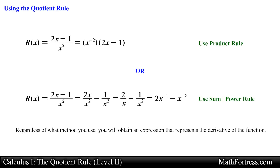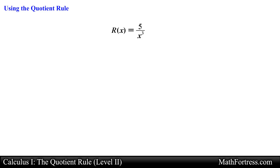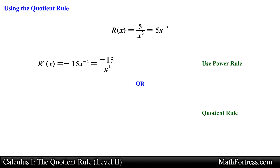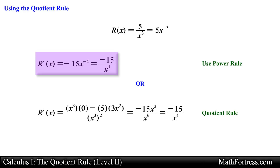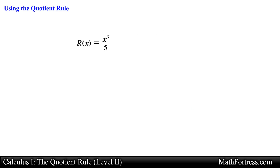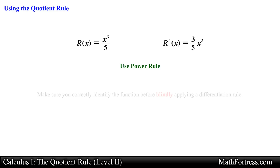Regardless of what method you use, you will obtain an expression that represents the derivative of the function. Depending on your preference, you might want to find the derivative by applying something other than the quotient rule. Similarly, the function 5 over x raised to the power of 3 can be solved by rewriting it as a negative exponent and then applying the power rule. You can also use the quotient rule, but the first method is easier and requires fewer steps. Lastly, x cubed over 5 is nothing more than a power function times the constant 1/5, so we apply the power rule. Not all quotients require the quotient rule — make sure you correctly identify the function before blindly applying a differentiation rule.